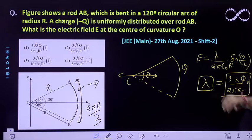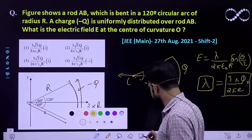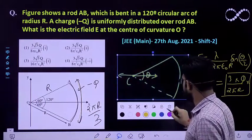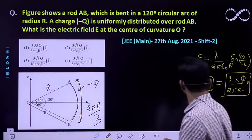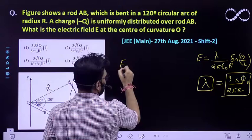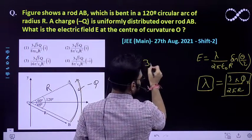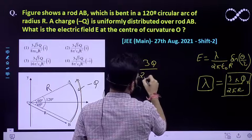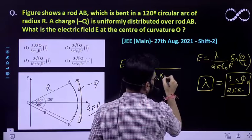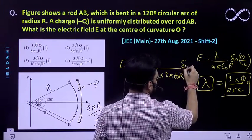We will be putting the value of all these parameters and eventually we will be getting the value of electric field. Electric field is already given as lambda. We will be putting the value of lambda: 3Q by 2 pi R, divided by 2 pi epsilon naught R.